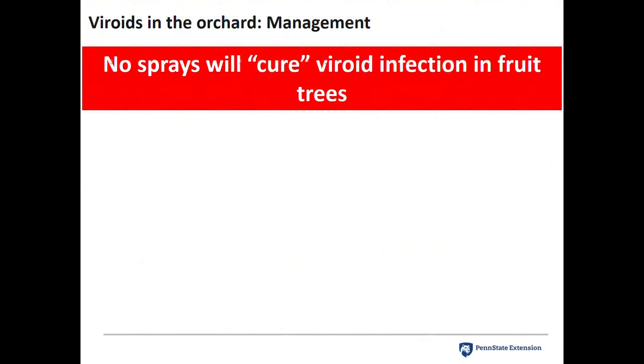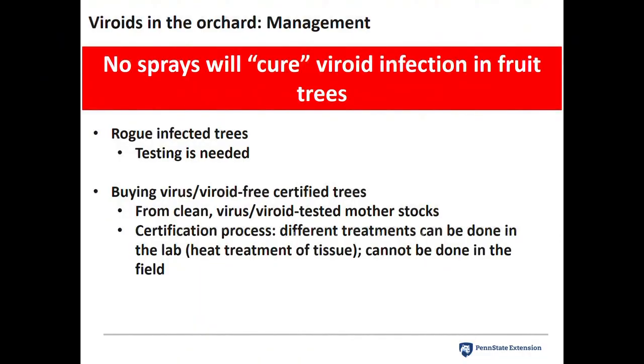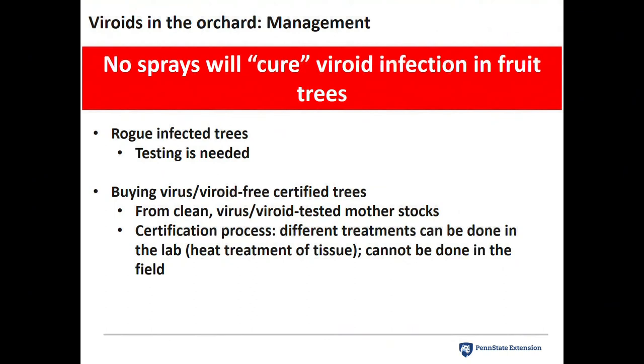Like viruses, there are no sprays or products to cure trees of viroid infections. If you find viroids in your orchard, you want to rogue and remove affected trees. Again, buying certified trees is key. Viruses seem to be becoming more and more problematic because of how many latent viruses are found in nursery stock. New York State and Cornell University are taking an active role in helping nurseries produce good, clean stock. Unfortunately, things have fallen through the cracks over the years, most likely due to demand — the science isn't keeping up with demand.